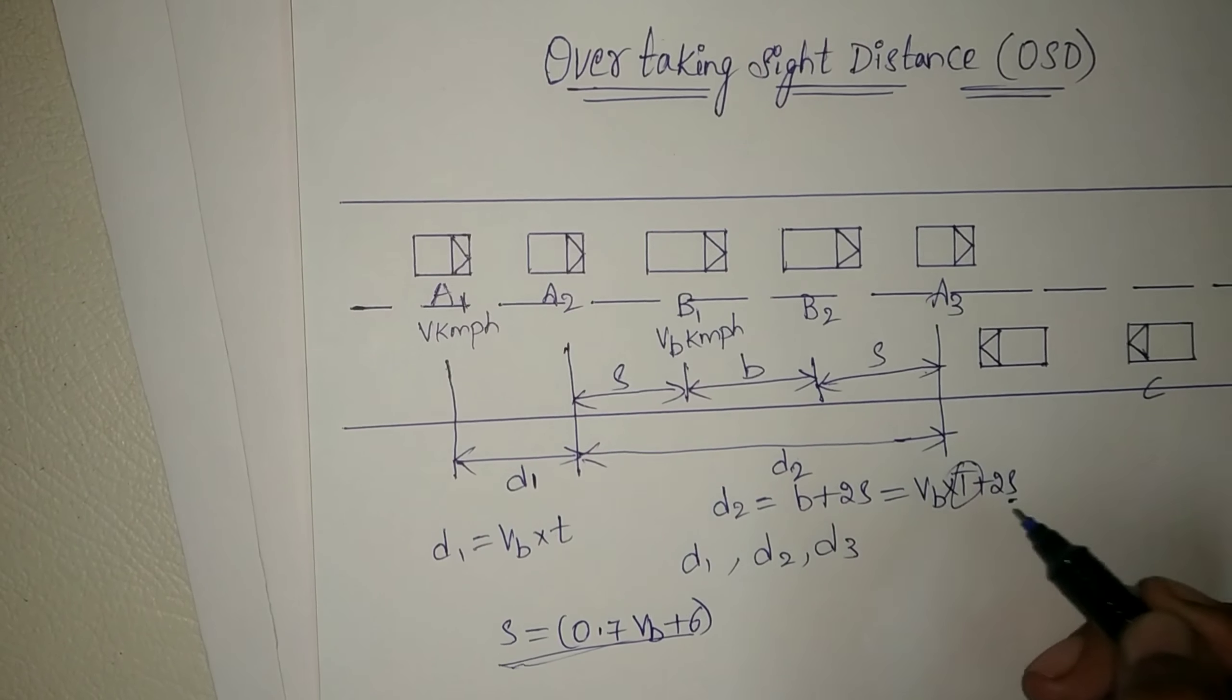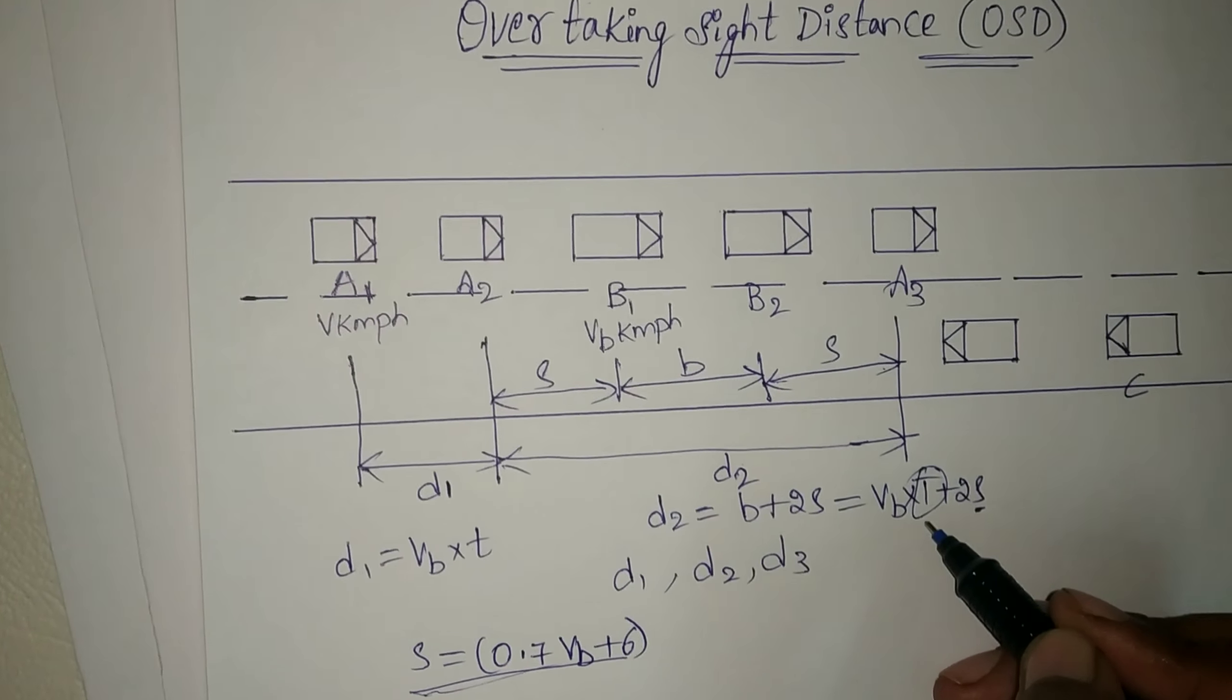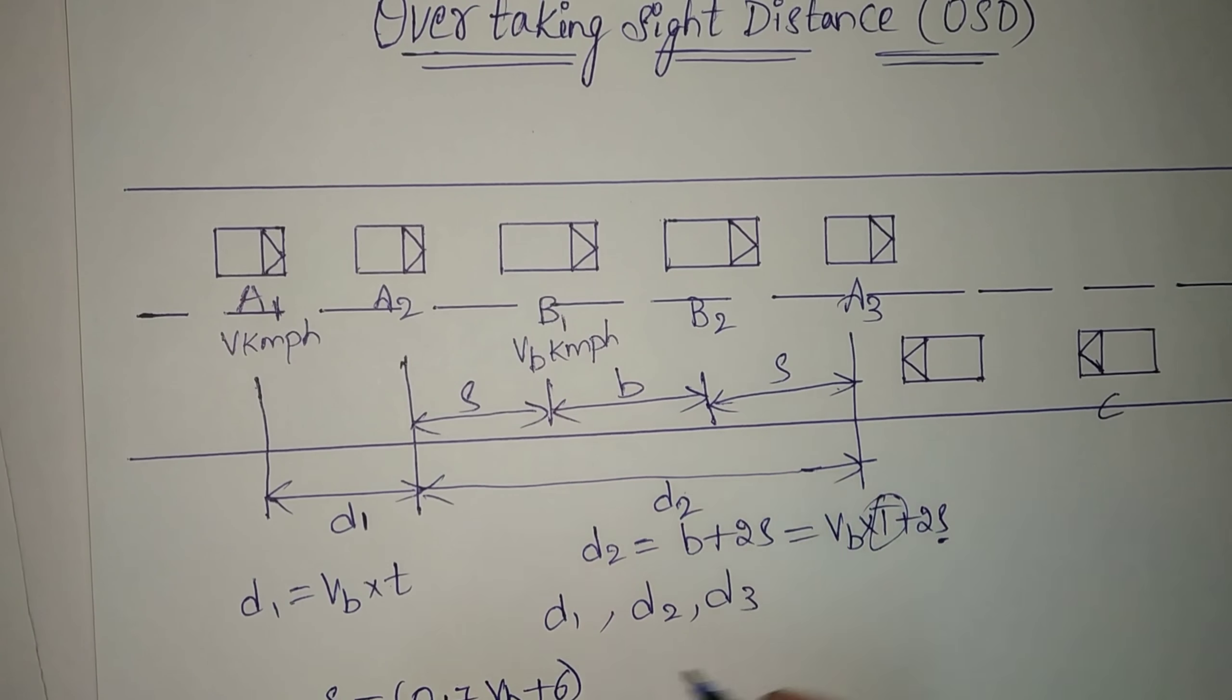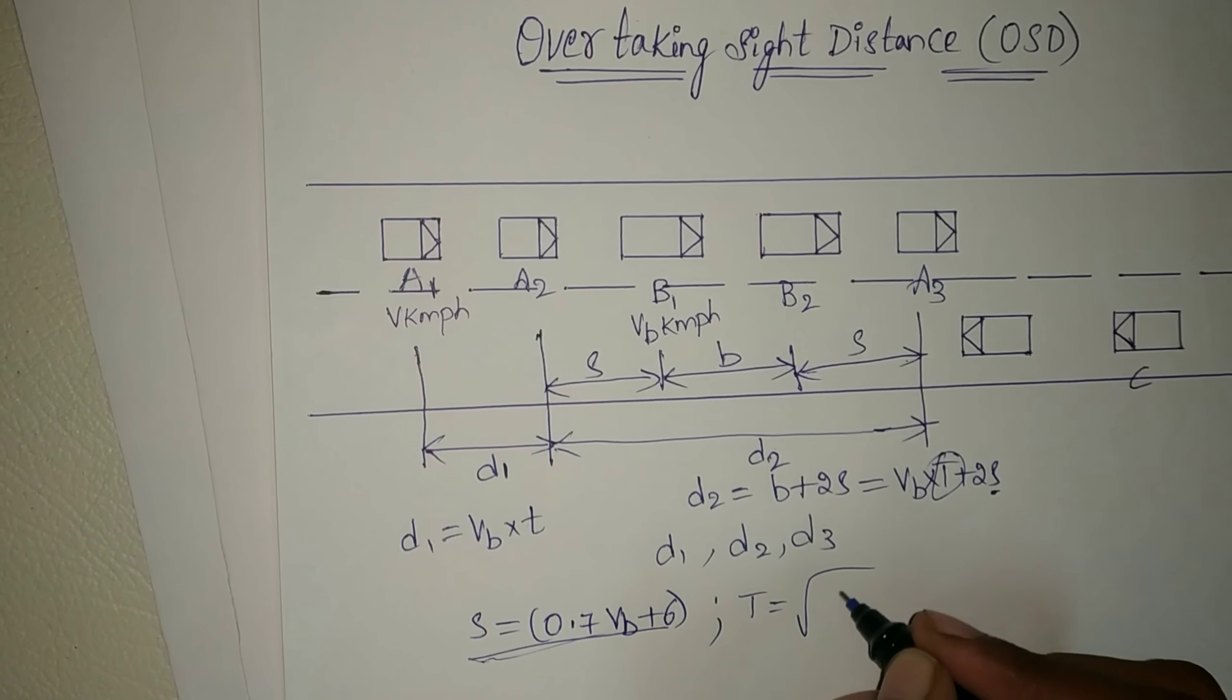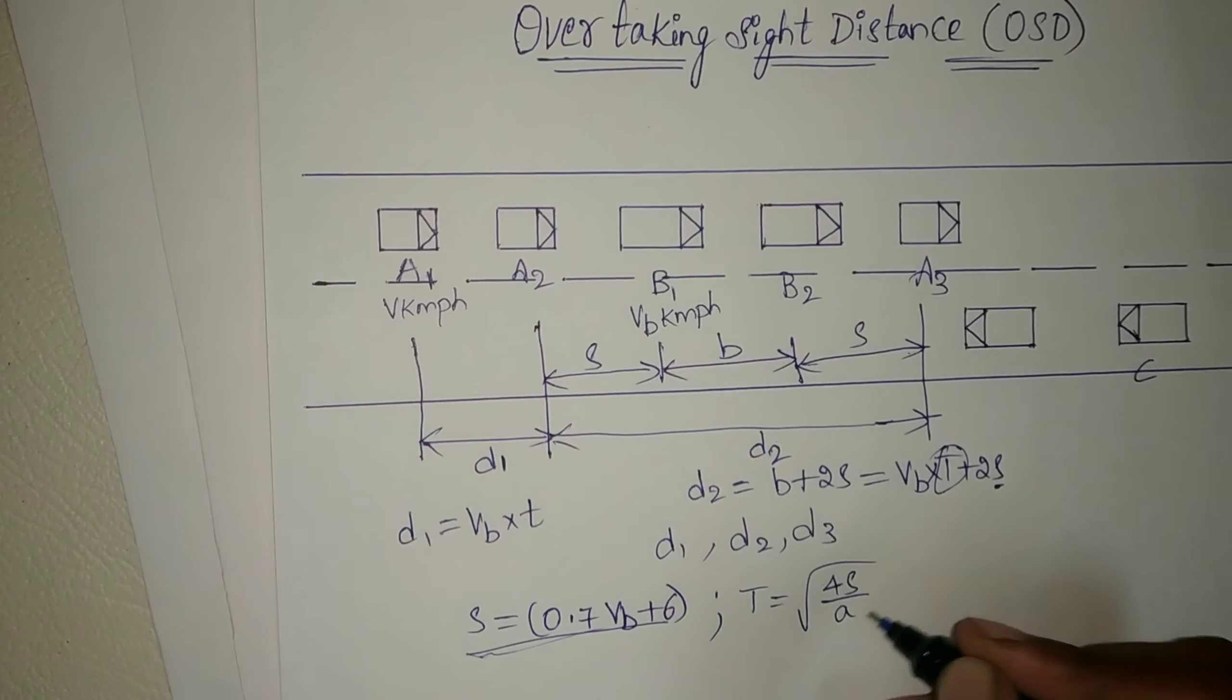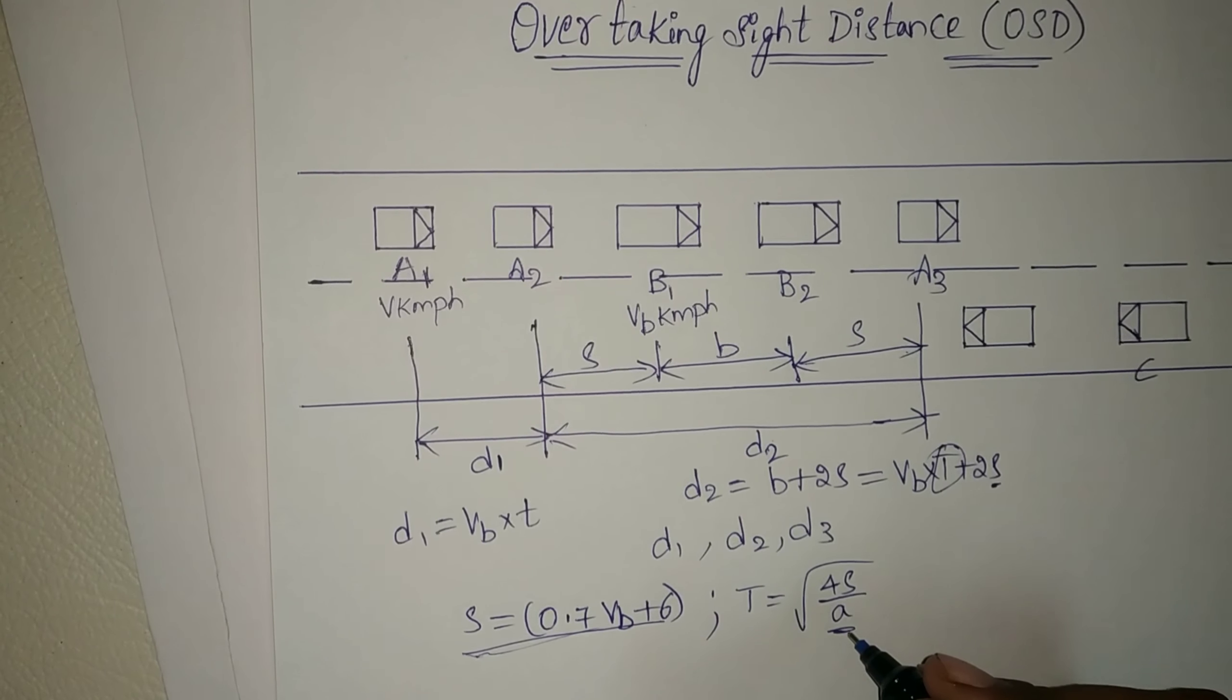t is time taken during the overtaking operation. t is equal to square root of 4s by a, where a is the acceleration of the vehicle.